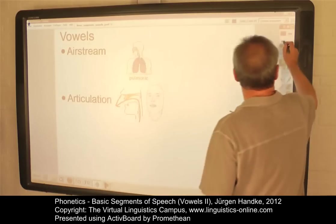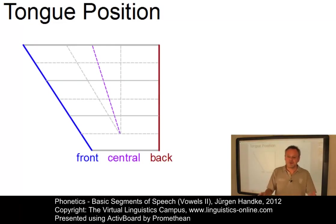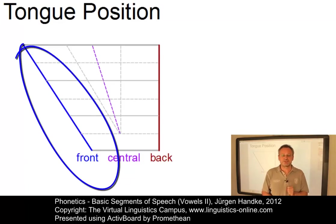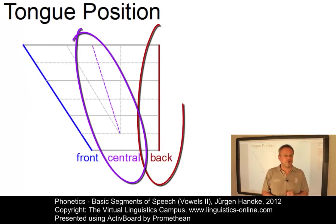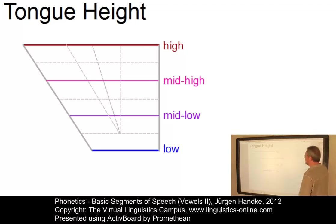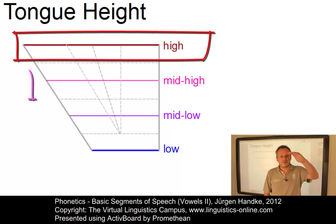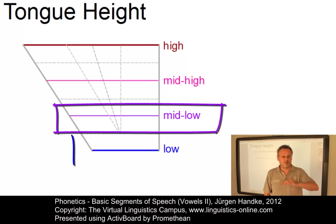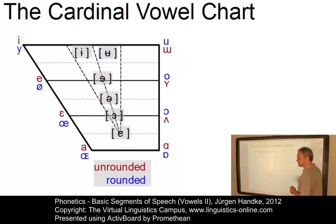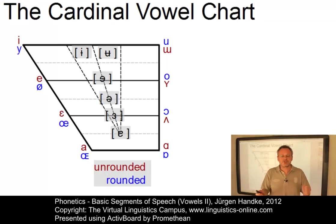The first parameter is tongue position. Depending on the position of the tongue, or more precisely on the location of the narrowing in the vocal tract, vowels can be defined as front vowels, central vowels, or back vowels. The second parameter is tongue height, with which we can classify high vowels, mid-high vowels, mid-low vowels, and low vowels. And finally, we have lip rounding. All vowels can be produced with rounded lips or with unrounded or spread lips.